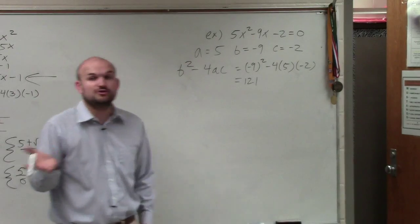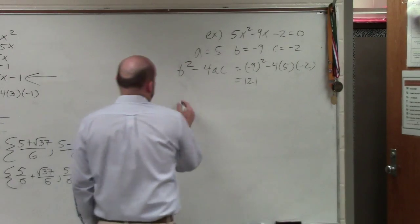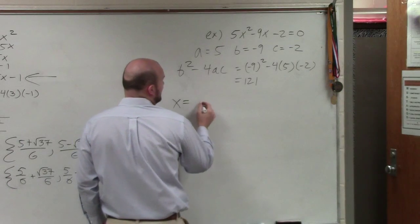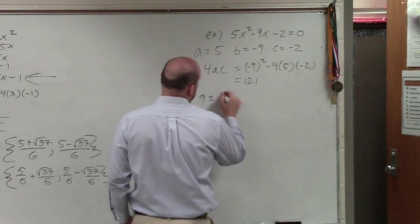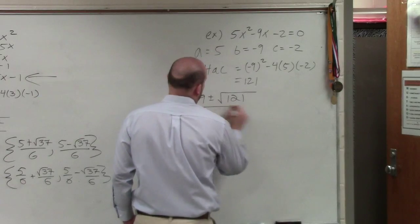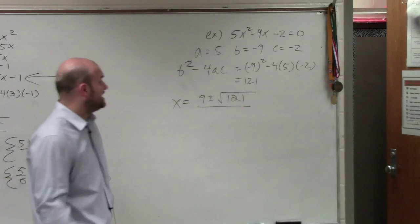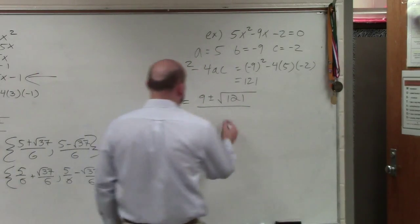So since it's a square number, we know we're going to have two real rational solutions. To find the rest of the solutions, I do opposite of b, which is going to be 9 plus or minus the square root of my discriminant, divided by 2 times a. a in my case is 5. So 2 times 5 is 10.